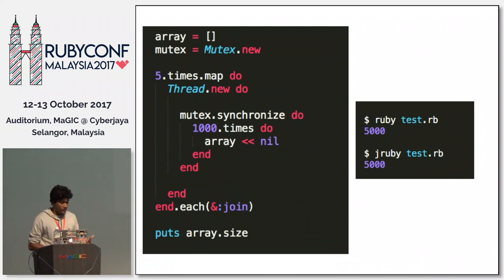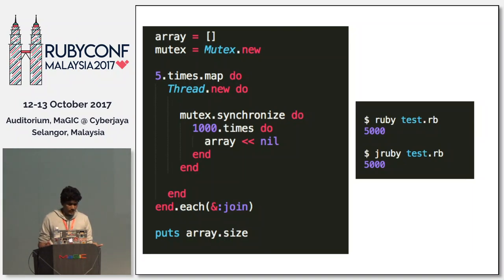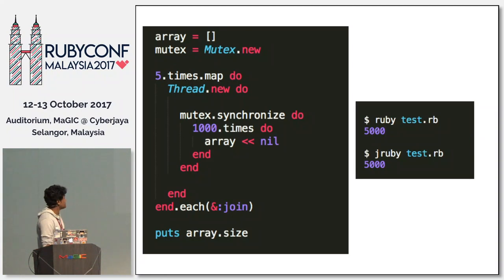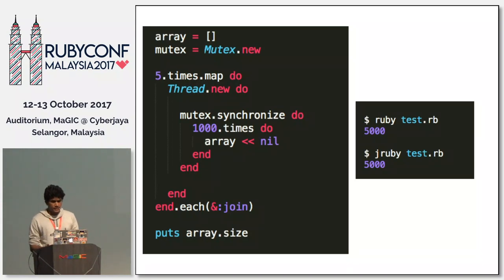To get rid of that bad code, we have a solution. If you still want to use that implementation and don't want to rewrite it, we can use mutex. Mutex works like a lock inside your code, and the place you want to lock — that block executing 100 times — will only be executed by one thread at a time. Because of that, you are safe enough, whether with Ruby MRI or JRuby, and you get the correct results.